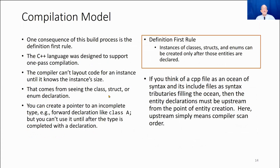So one of the consequences of this build process is the definition-first rule. The C++ compiler, the language was designed to support one-pass compilation. So what that means is that before we can create an instance of something, we need to know its size. The compiler can't lay out code for it until it knows how big it is. And the only way it knows how big it is is to see the declaration for the class that we're creating an instance of or whatever. So we have to see the definition-first, we have to see the declaration-first of a class before we can create an instance of that class.